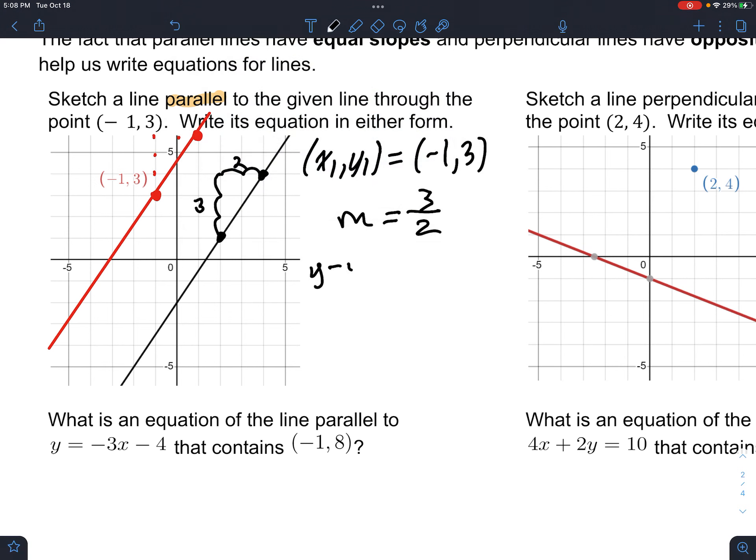And the equation of that line we really want to use point slope form since we have a point, right? So, y1 is 3. This is 3 halves. And x1 is negative 1. So, this is the equation of that line.